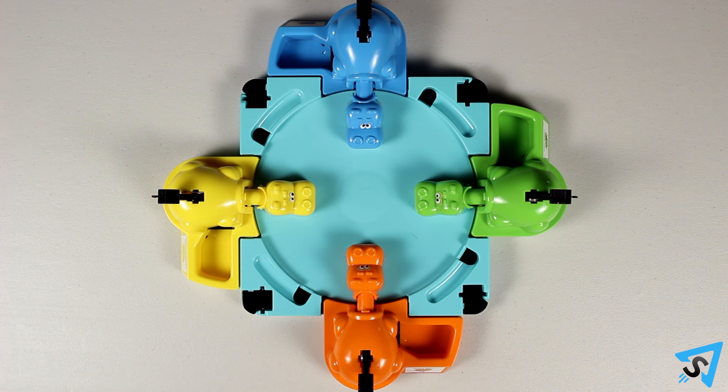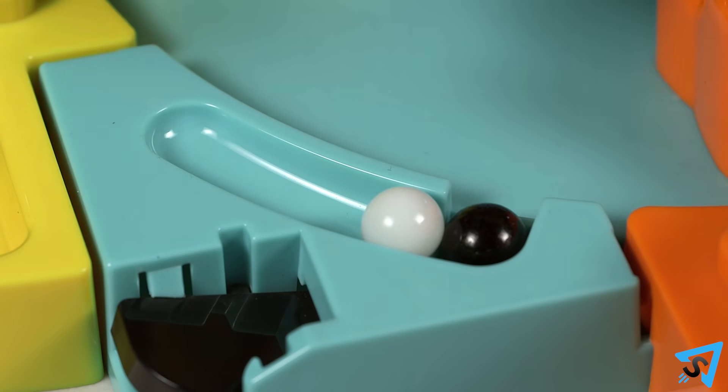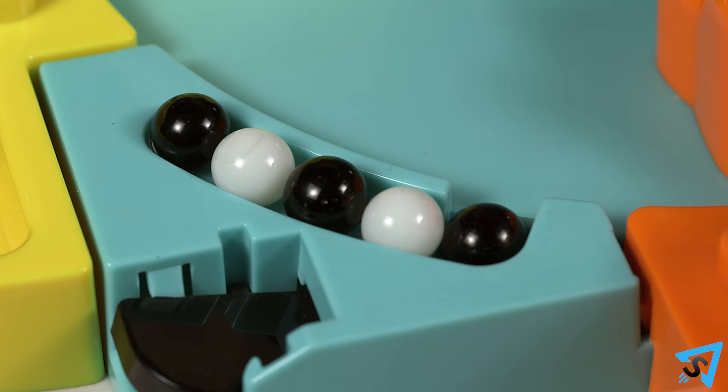Setup. Place the board on a flat surface and each player selects a hippo. Place five marbles in each marble release area near each of the player's hippo.